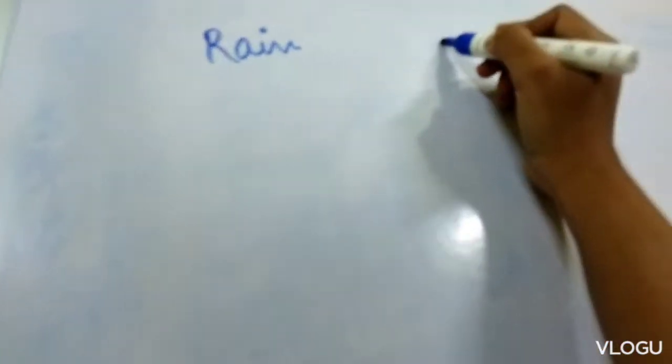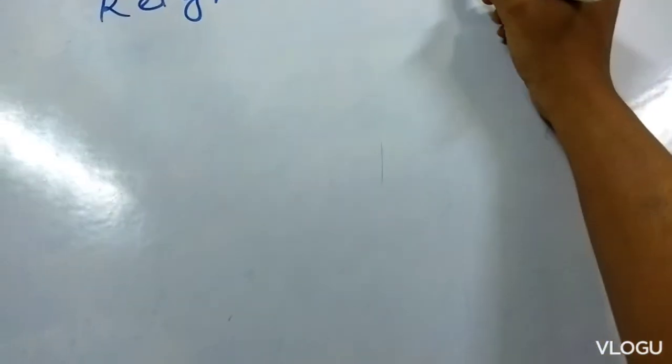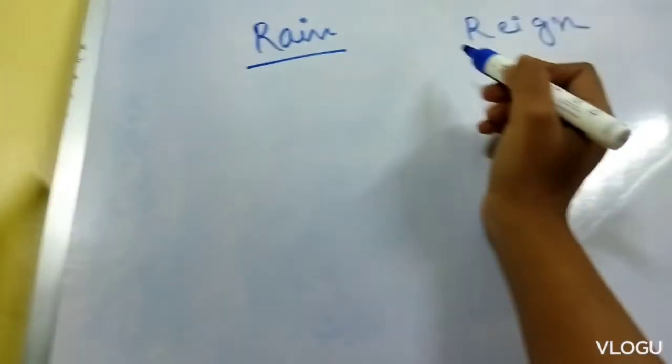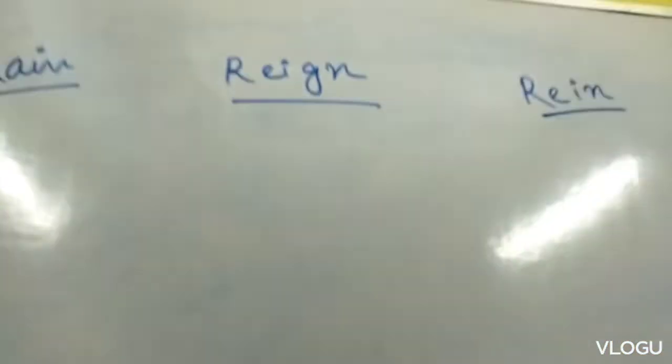They are rain, R-A-I-N, reign, R-E-I-G-N, and rein, R-E-I-N.